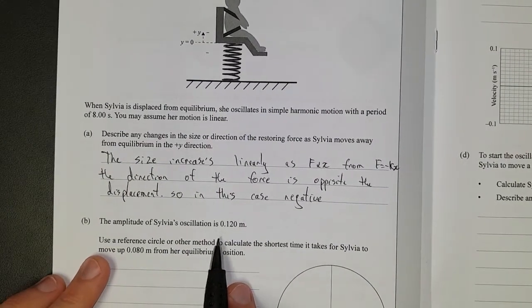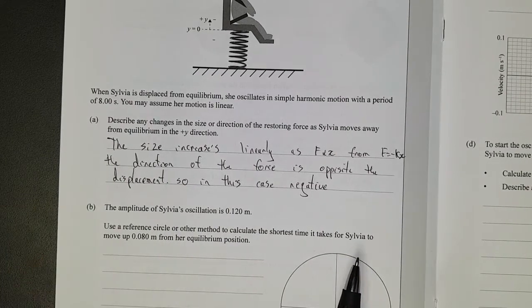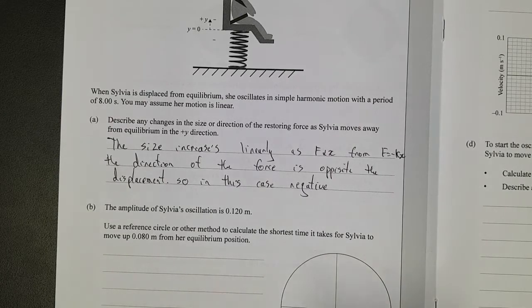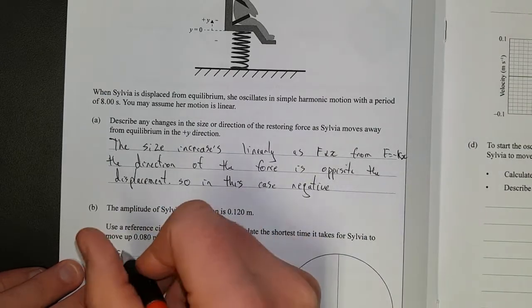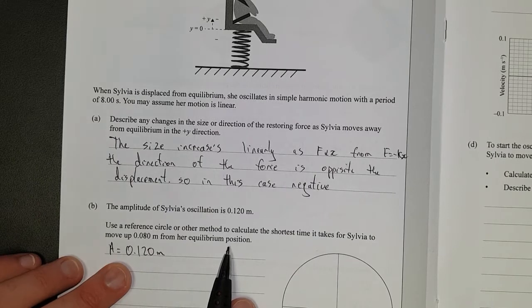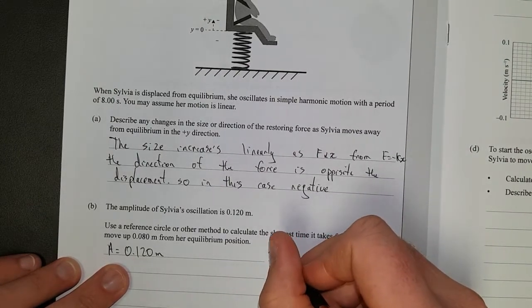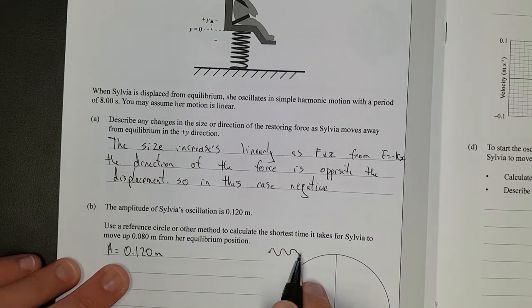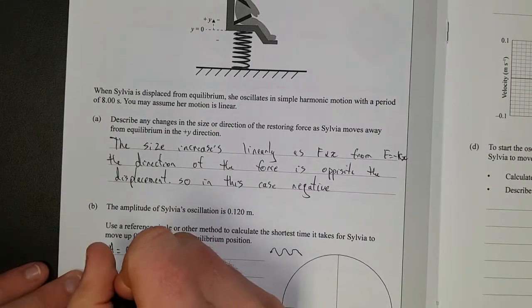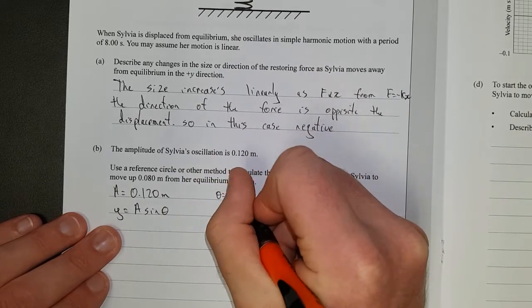Right, next question. The amplitude of Sylvia's oscillation is 0.120 meters. Use a reference circle or other method to calculate the shortest time it takes for Sylvia to move up 0.08 meters from her equilibrium position. So that's going to be pretty straightforward. So let's just write what we've got. A is equal to, that's the amplitude, 0.120 meters. So she's starting off, is she starting off at 0? Yeah, she's starting off at the equilibrium position, and she's moving up. So if you think of it, here she is here, and she's moving up. So she's starting off at 0, and she's going to be up, and then go down, then up, then down, then up. So we're going to be using sine.